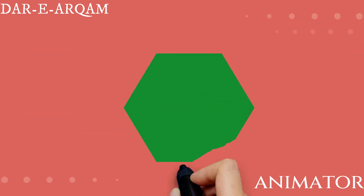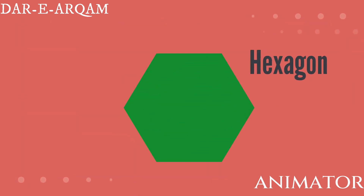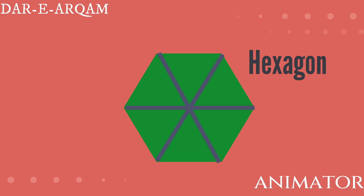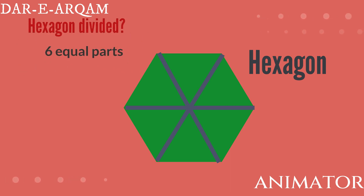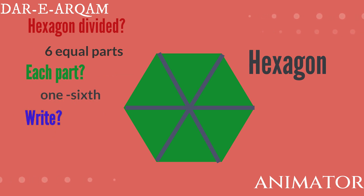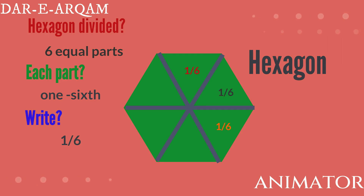Now the second shape we have taken is hexagon. We divide this hexagon into six equal parts, and each part will be called one sixth and written as one by six.